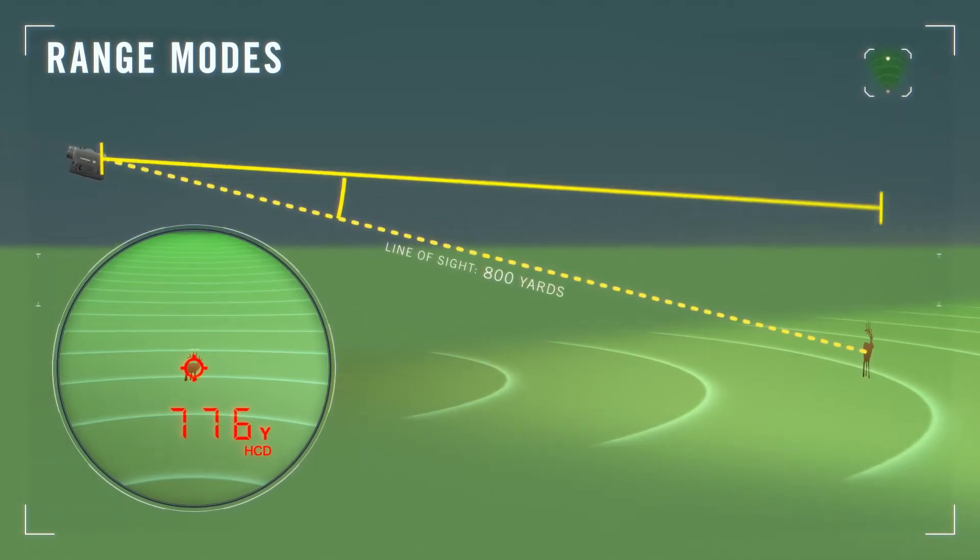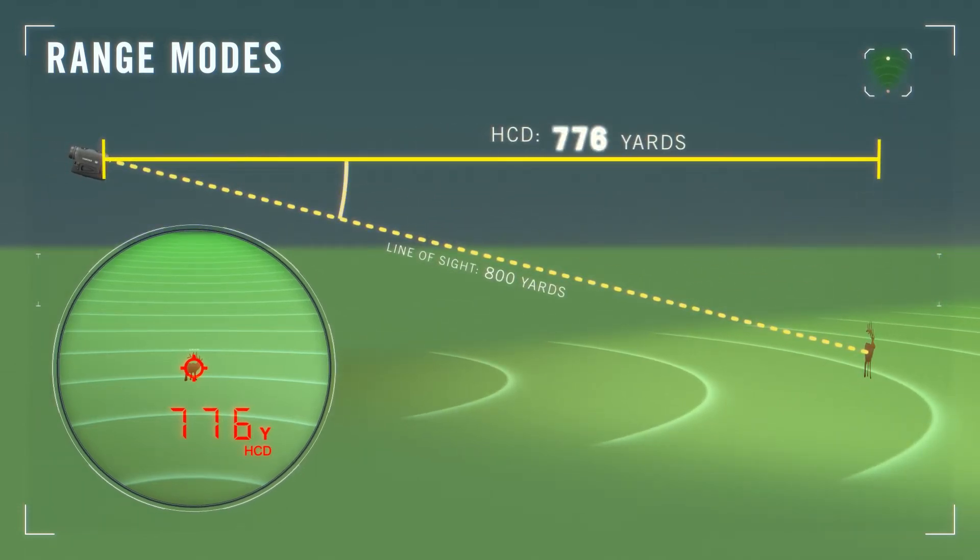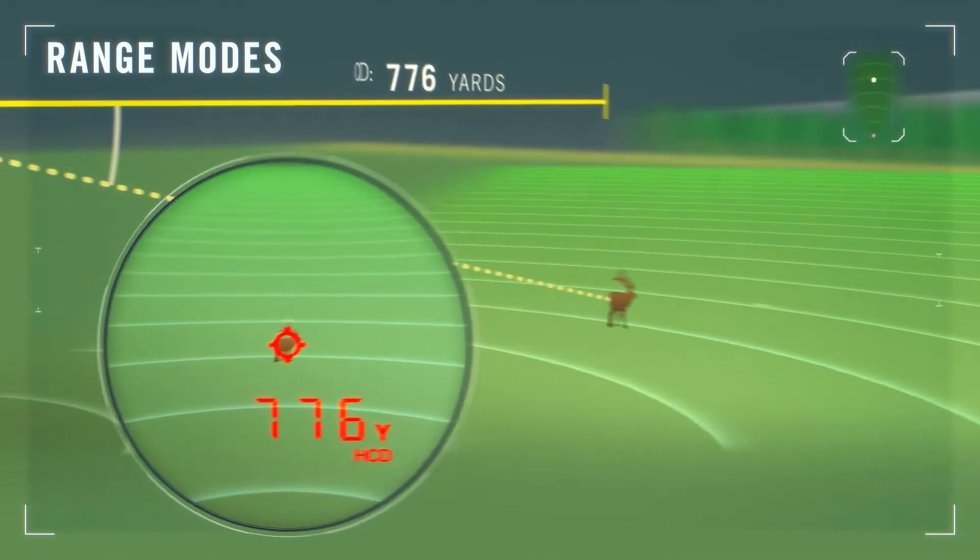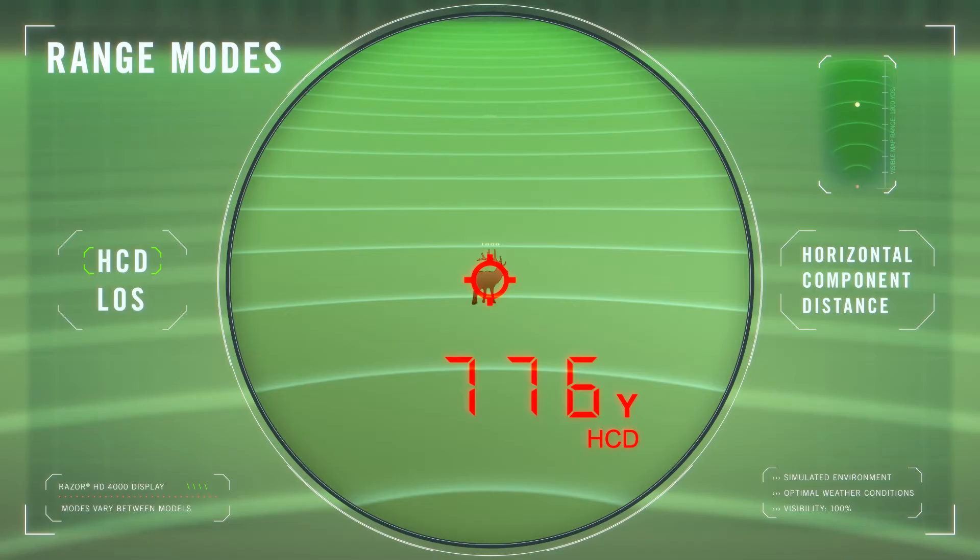This mode is most useful for archers shooting out of a tree stand or shooters who are shooting from an angle, providing an angle compensated distance for an accurate shot. Archers simply use the appropriate pin for the range displayed.